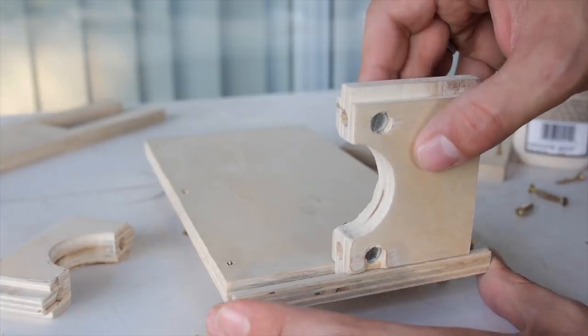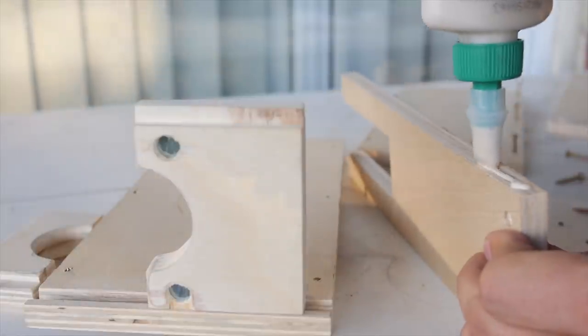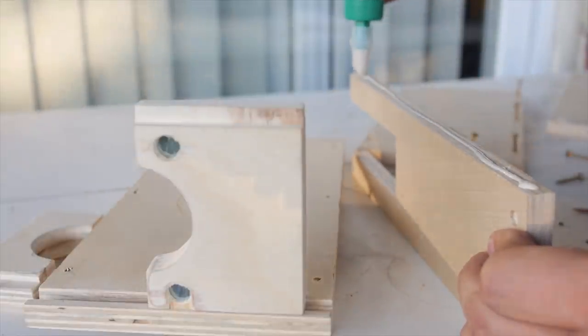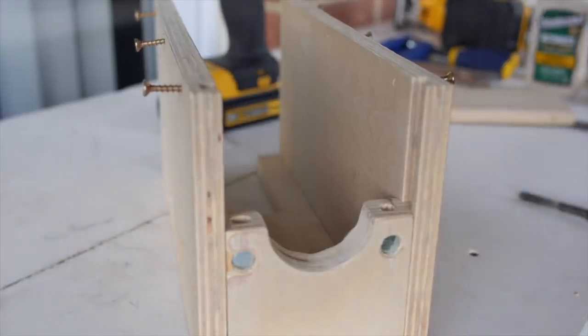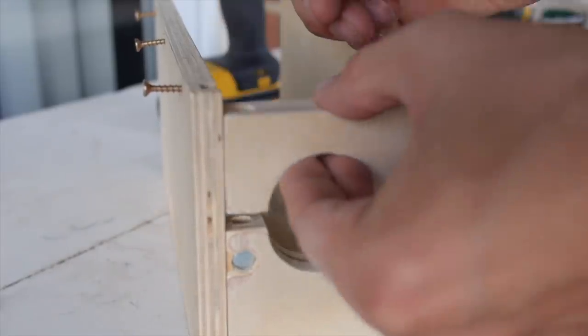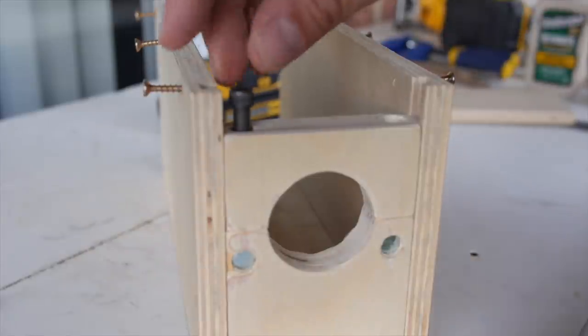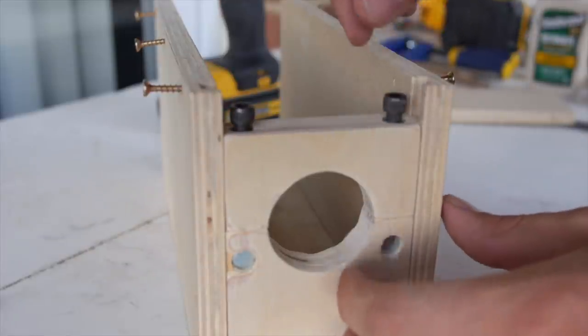Once that bottom piece was ready, it was just a matter of gluing everything up. And then once you have the glue on, screwing the box together. You have to be careful not to screw into this front piece as that needs to remain free so that you can clamp down onto the drill.